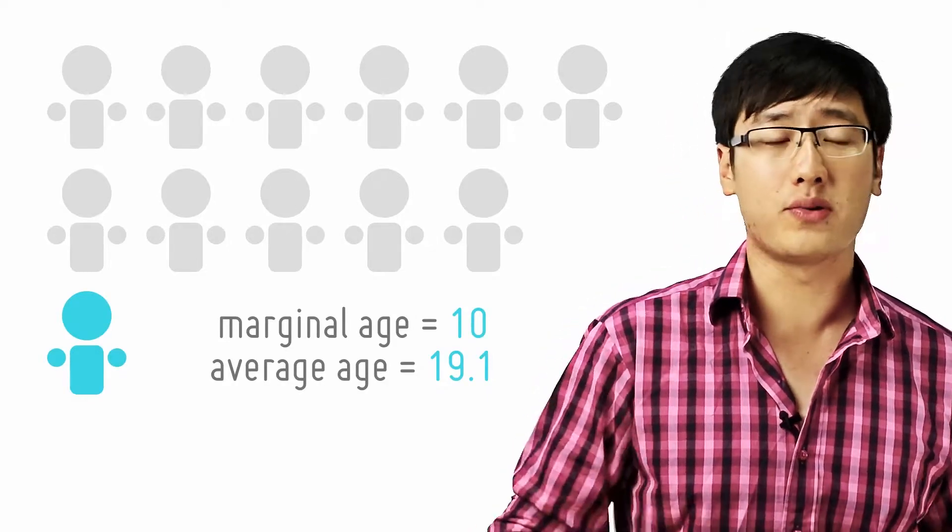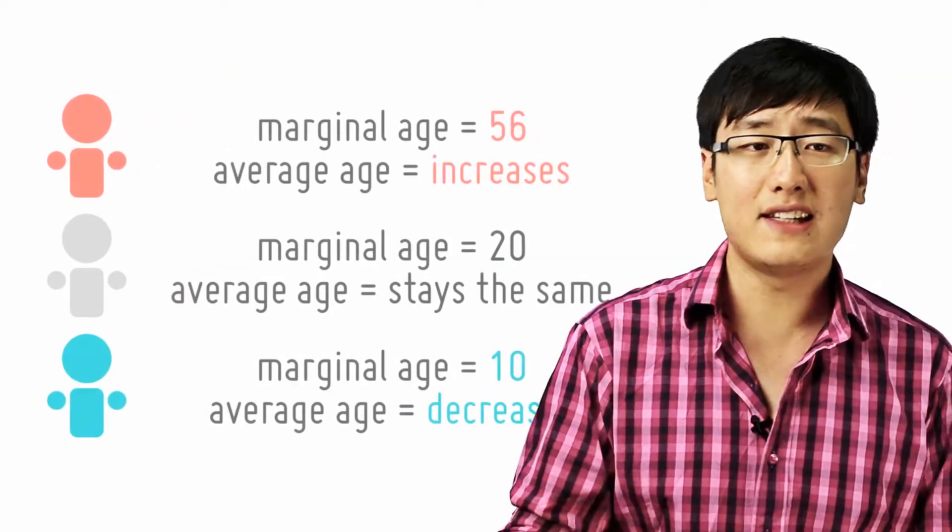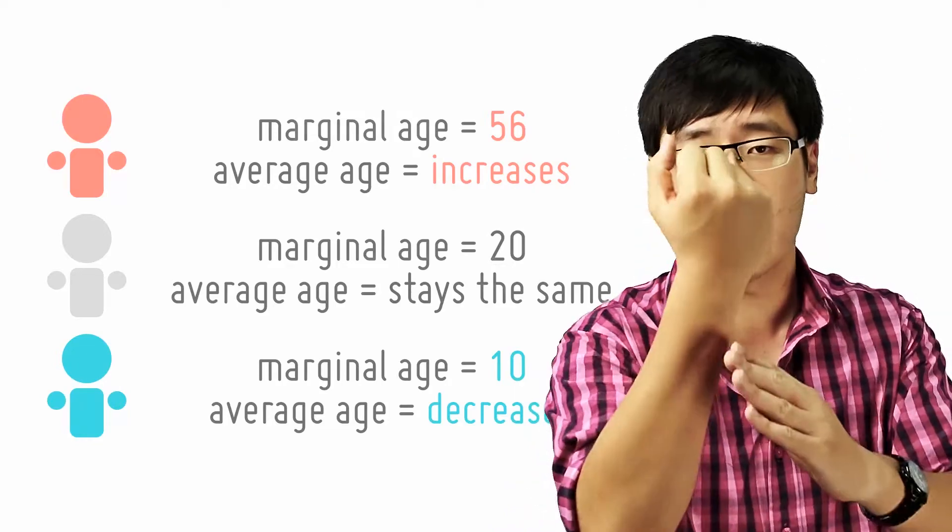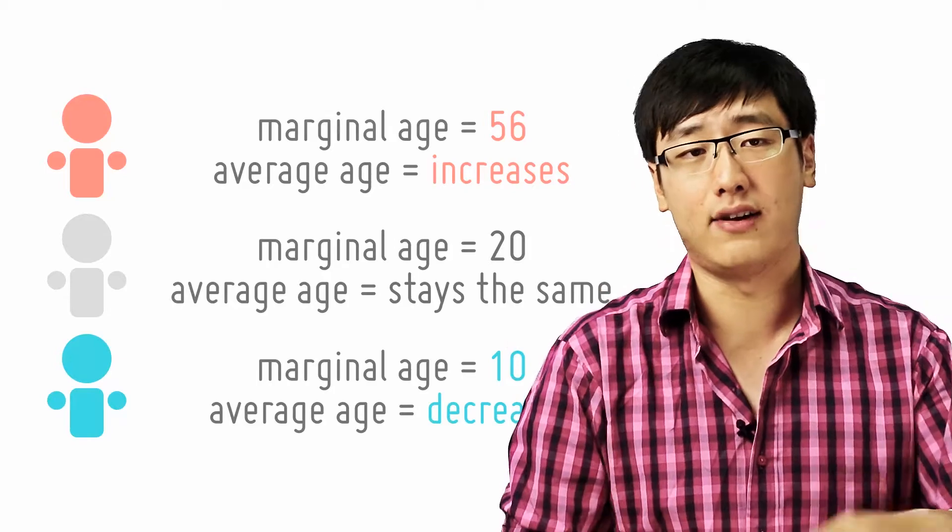If the marginal equals the average, like the 20-year-old, the average stays the same. If the additional one you add is above the average, it will drag the average up. If the marginal is below the average, the average will fall.